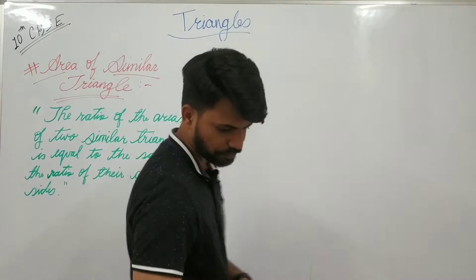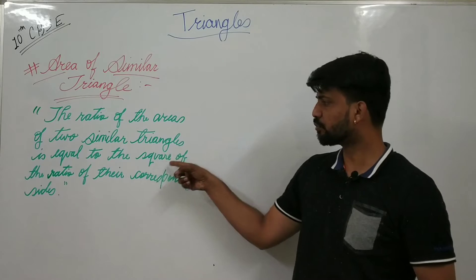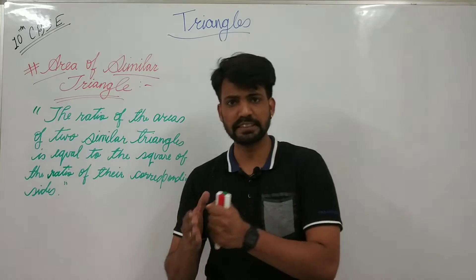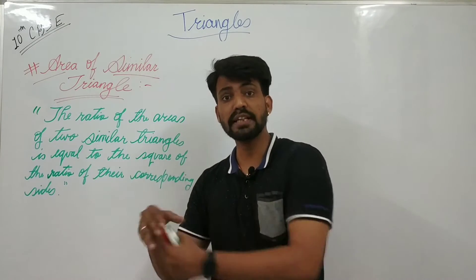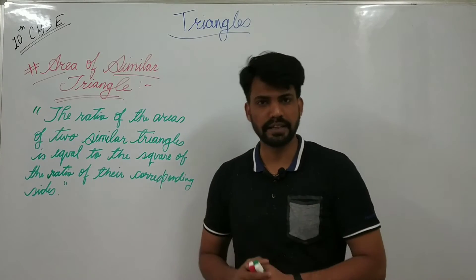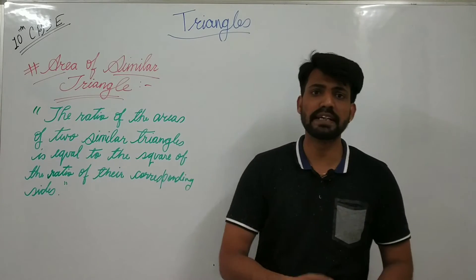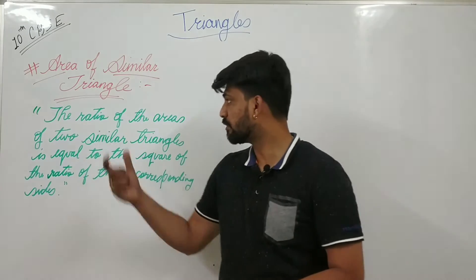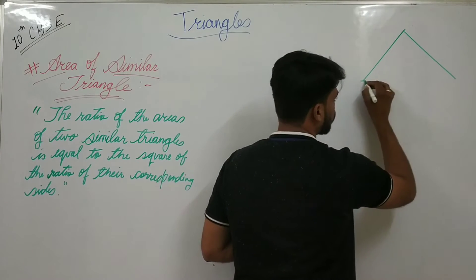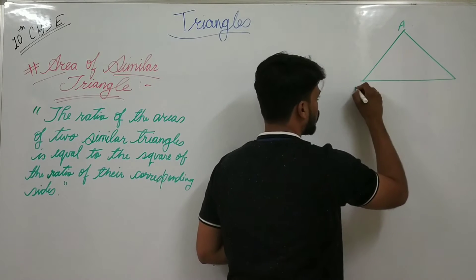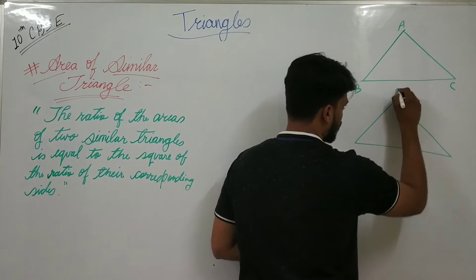The theorem states: the ratio of the areas of two similar triangles is equal to the square of the ratio of their corresponding sides. Now for the proof, let's draw two triangles. Let's consider the first triangle as ABC and the second triangle as PQR.